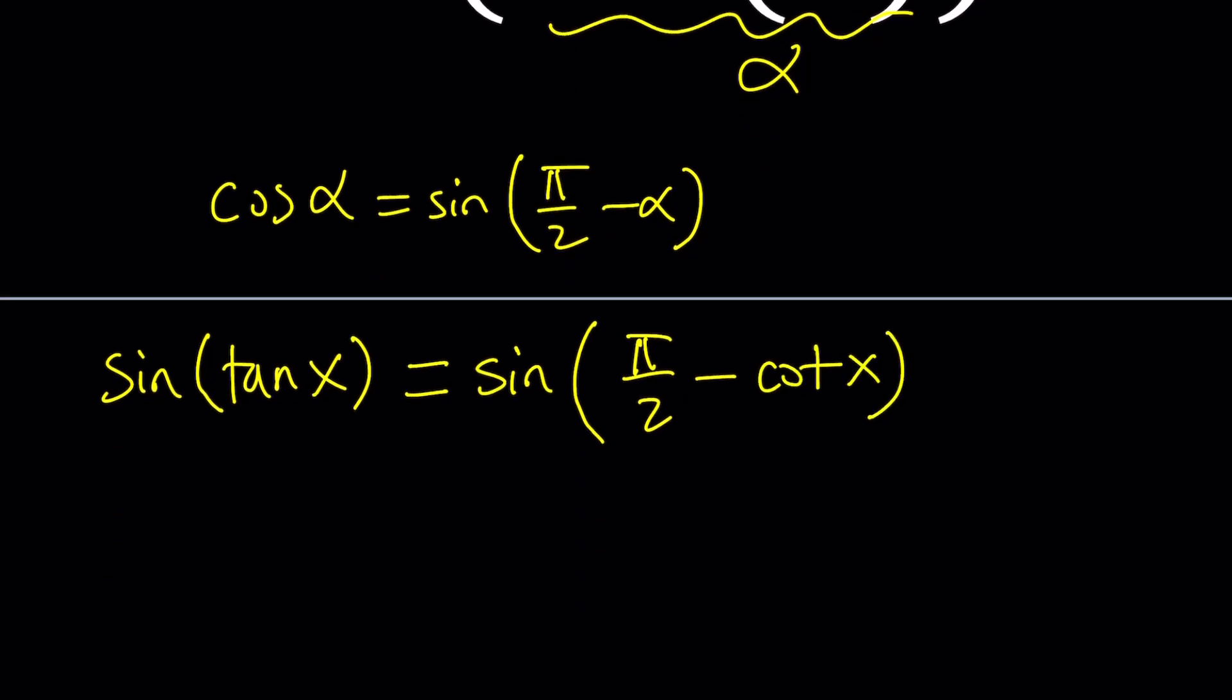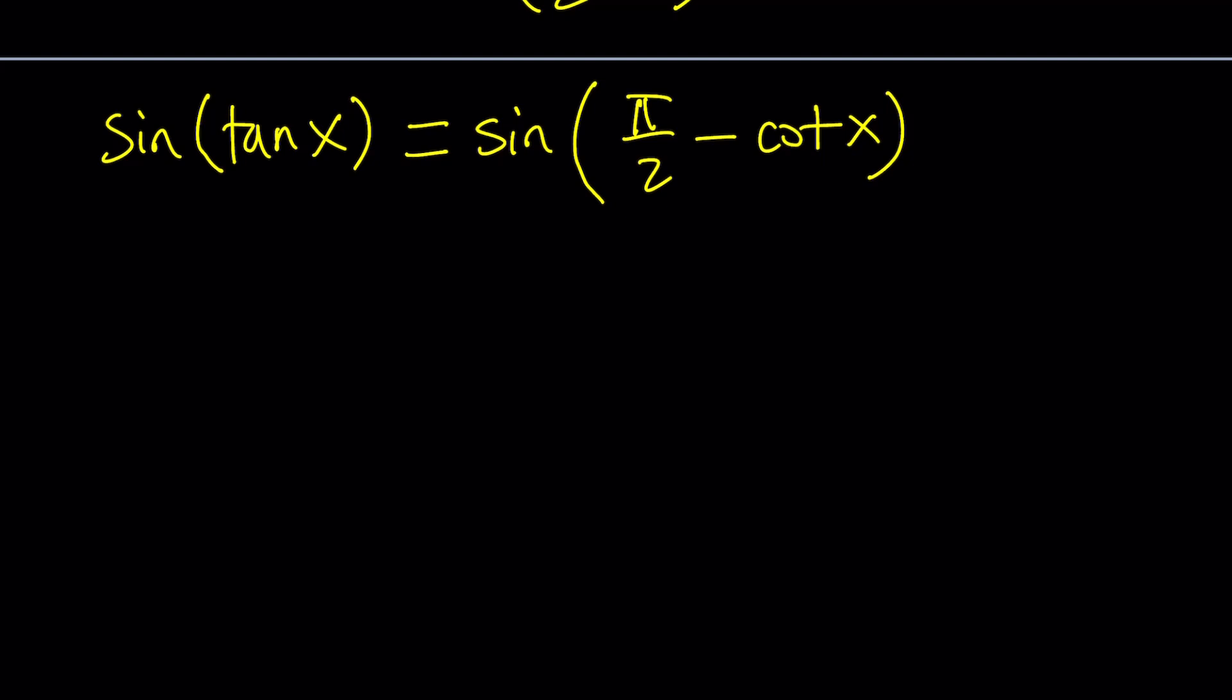So let me make that clear one more time. I have cosine of alpha and I'm going to write it as sine of pi over 2 minus alpha. And that's an identity. Great. So the left-hand side is sine of tangent x.